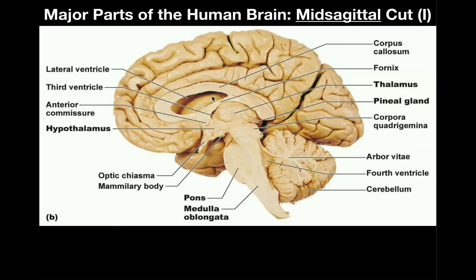The hole that the corpus callosum surrounds is called the lateral ventricle. There is a lateral ventricle on both sides of the brain — a right lateral ventricle, shown here, and if we were looking at the other hemisphere, we would have the left lateral ventricle. Always remember that there are two lateral ventricles, one left and one right.